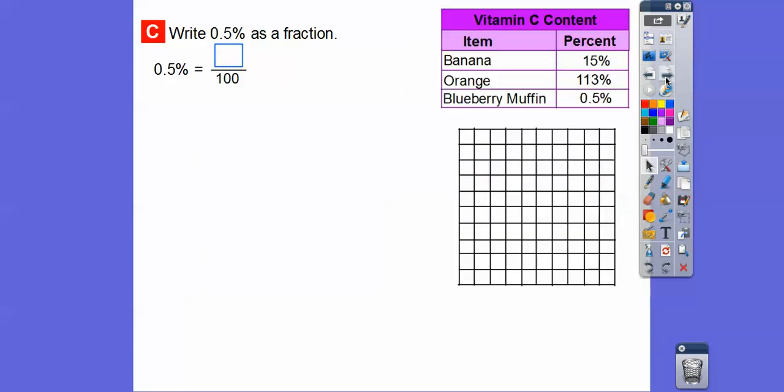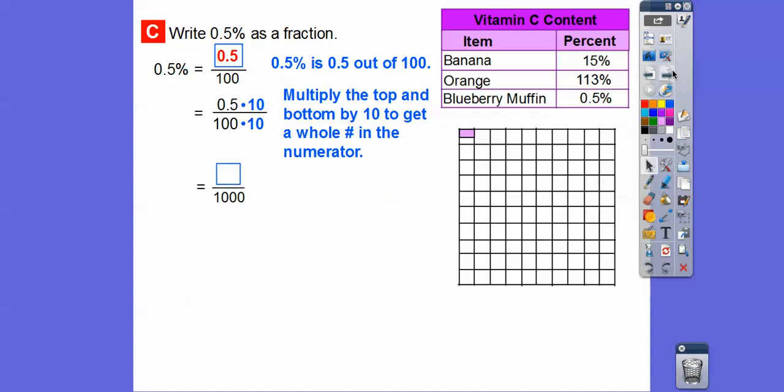So 0.5% is the same as 0.5 out of 100, which is just a half a square out of these 100 right here. Now we can't have decimals inside of fractions right there. So what we're going to do is move this decimal over one place. And what makes us do that is we multiply it by 10. So we've got to multiply the denominator by 10 also. So let's multiply the numerator and denominator by 10, and that way it moves the decimal over one place. So the 0.5 becomes 5.